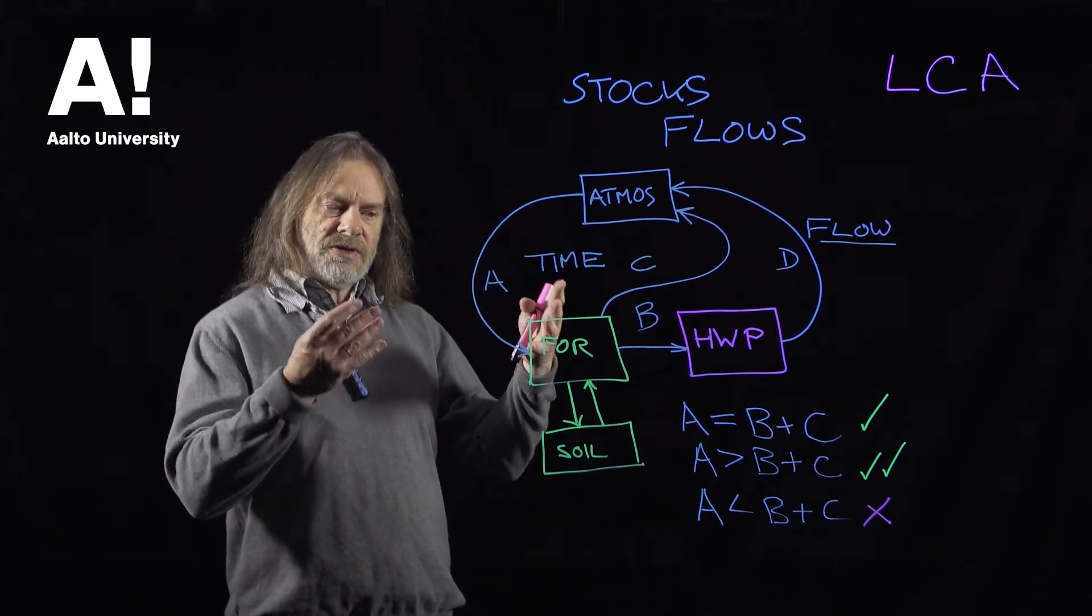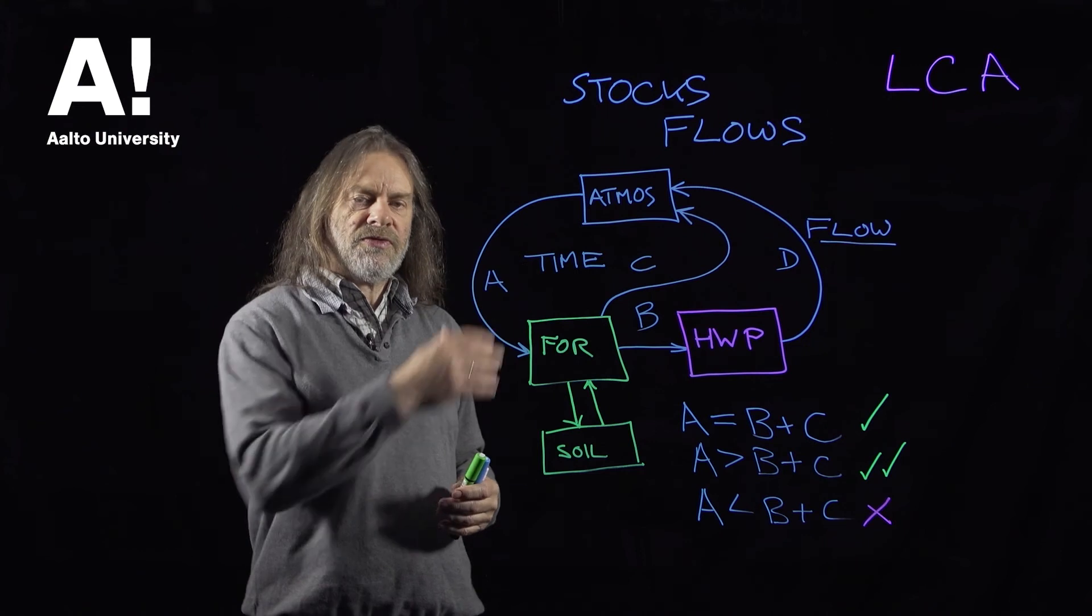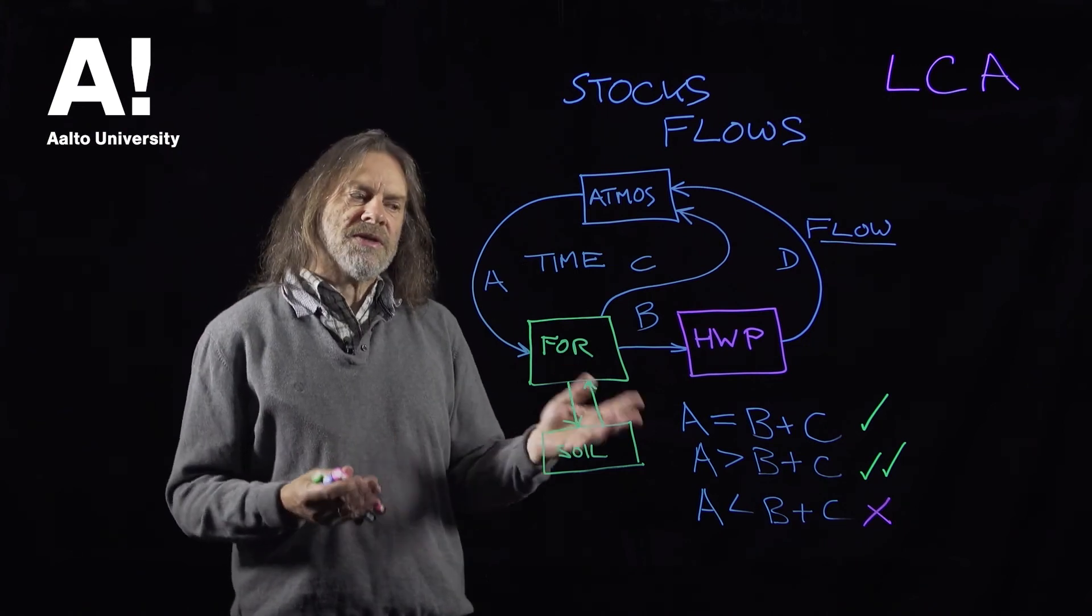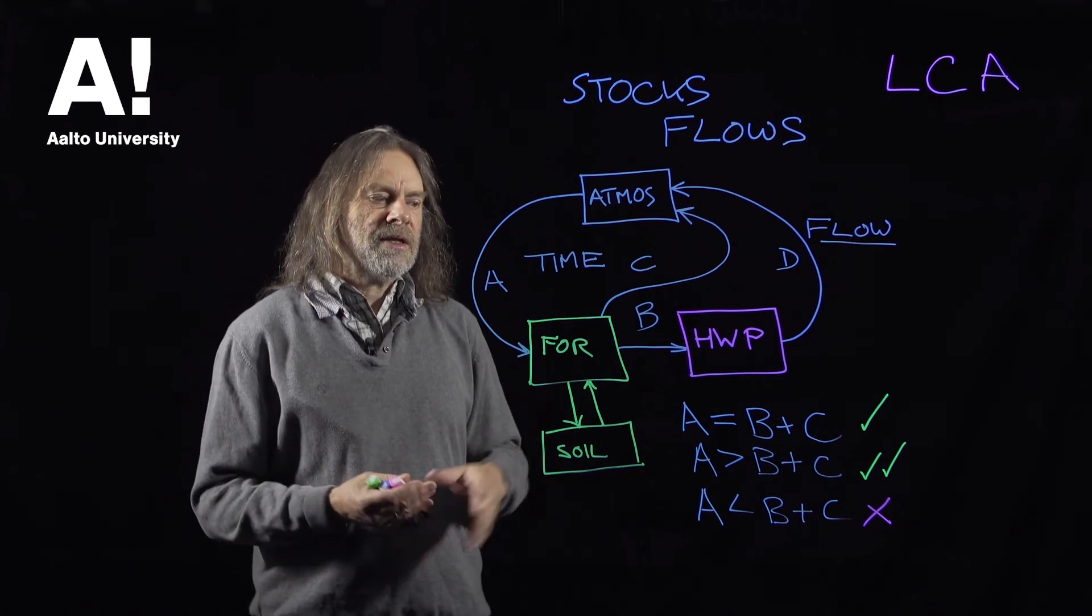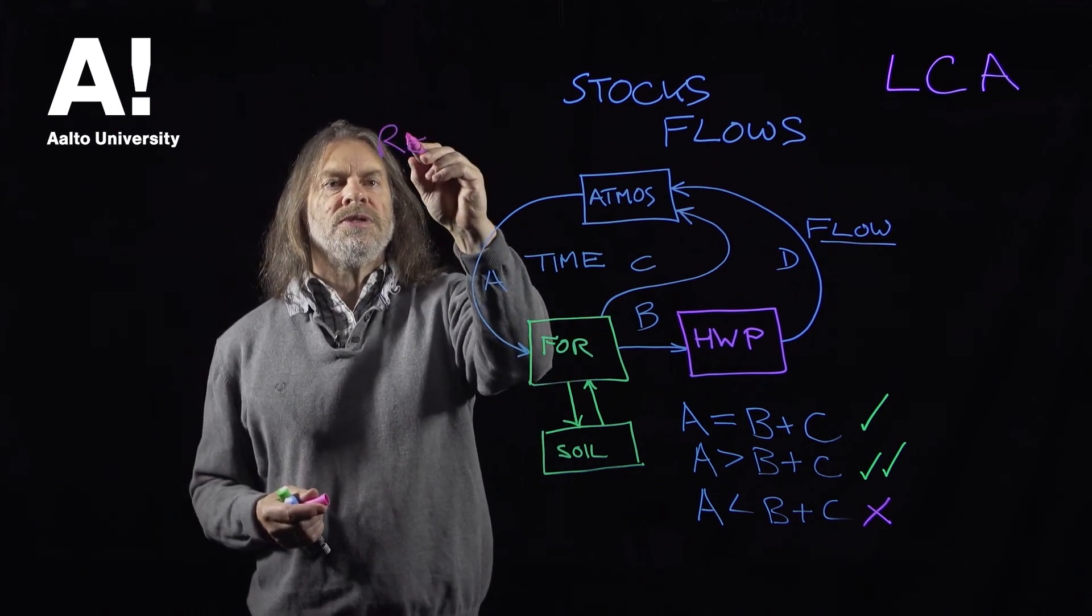So stocks and flows, flows of natural materials, carbon flows is a very good way of thinking about sustainability. And this type of material that we produce in the forest is referred to as a renewable material.